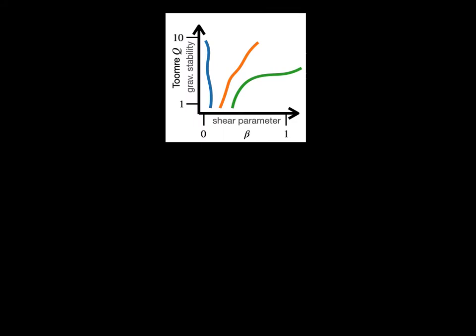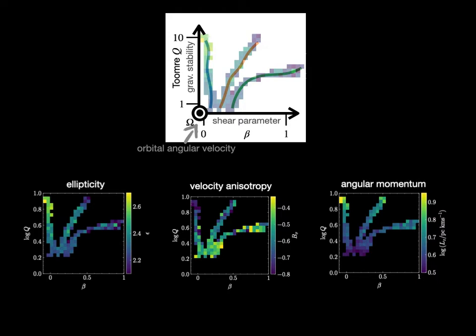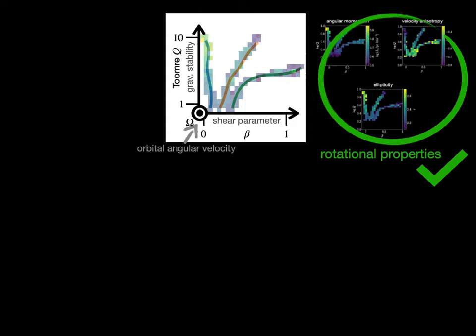So what do we find? We look at the average properties of our cloud sample across our dynamical parameter space, spanned by the shear parameter, the gravitational stability parameter, and the orbital angular velocity of the galaxy. The rotational properties of the clouds clearly change as the degree of galactic differential rotation increases and as the gas reservoir becomes more gravitationally stable. So we find that in some way galactic dynamics affect the rotational properties of the clouds.